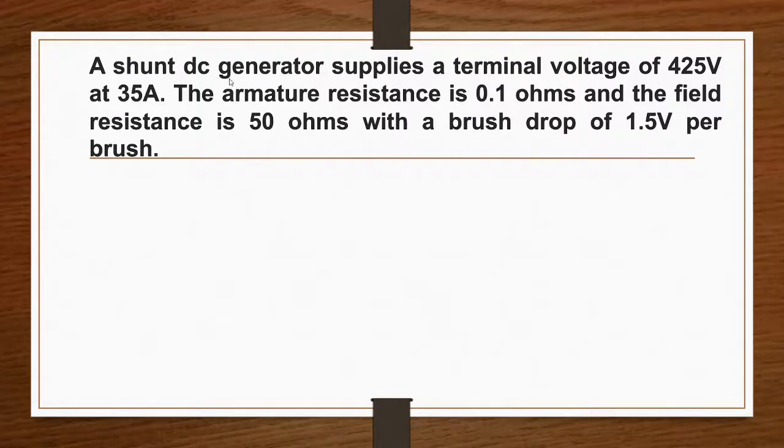A shunt DC generator supplies a terminal voltage of 425 volts at 35 ampere. The armature resistance is 0.1 ohms and the field resistance is 50 ohms with a brush drop of 1.5 volts per brush.